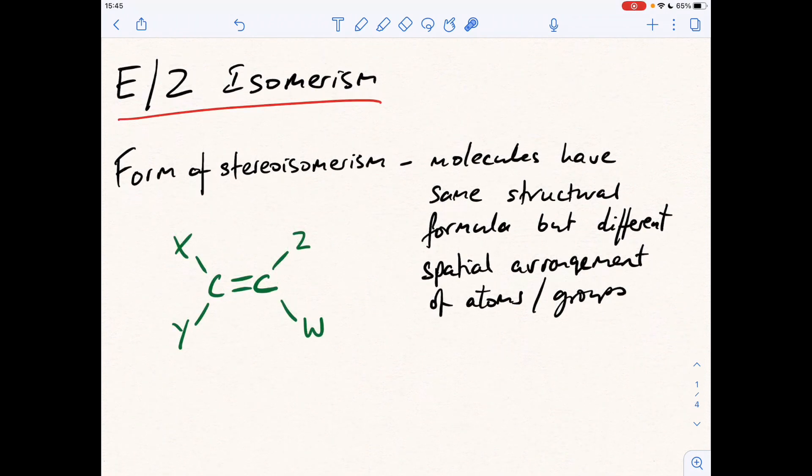Now it's probably worth saying at this point that if Y there had been an X, so because that's the same as that, this wouldn't be able to show E/Z isomerism because you haven't got different atoms or groups of atoms on each carbon of the double bond, because they're the same.